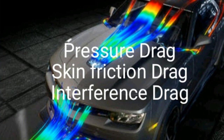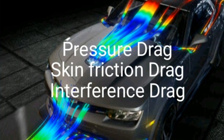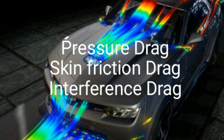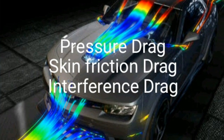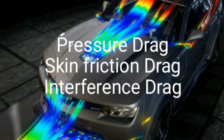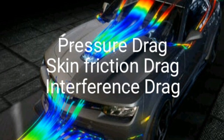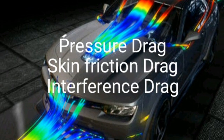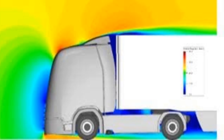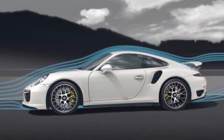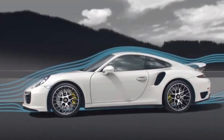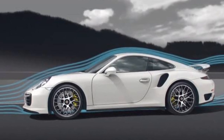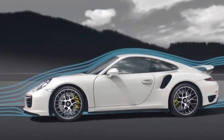Parasitic drag is again classified as pressure drag, skin friction drag, and interference drag. Pressure drag is formed by the air molecules striking into the body of the vehicle, and it contributes to the majority of the total drag faced by a vehicle.